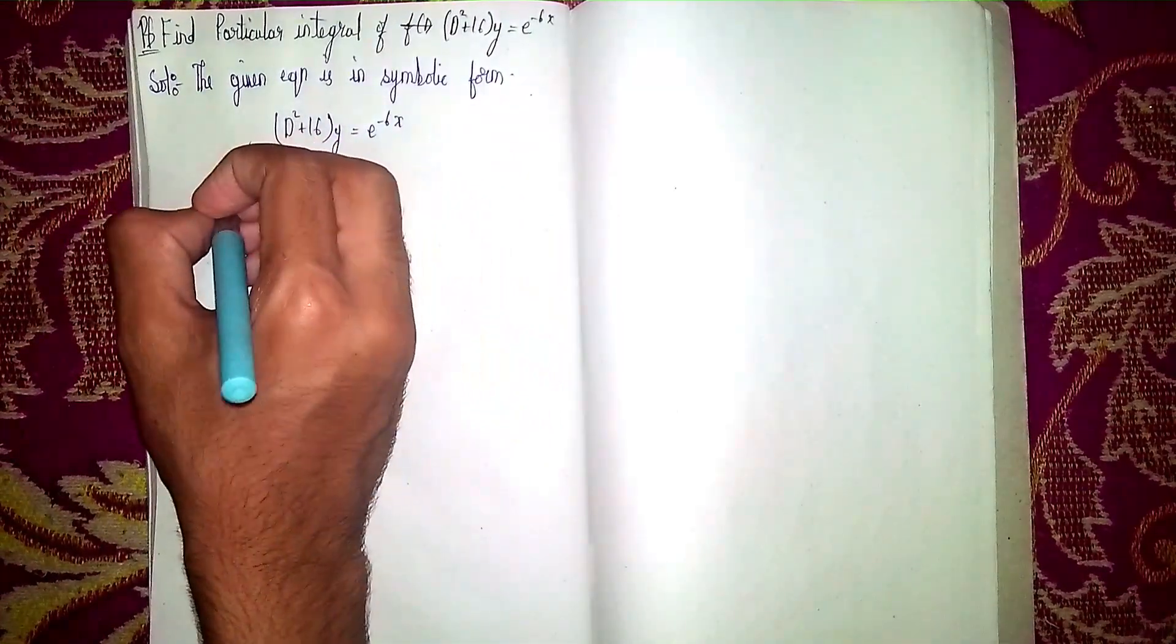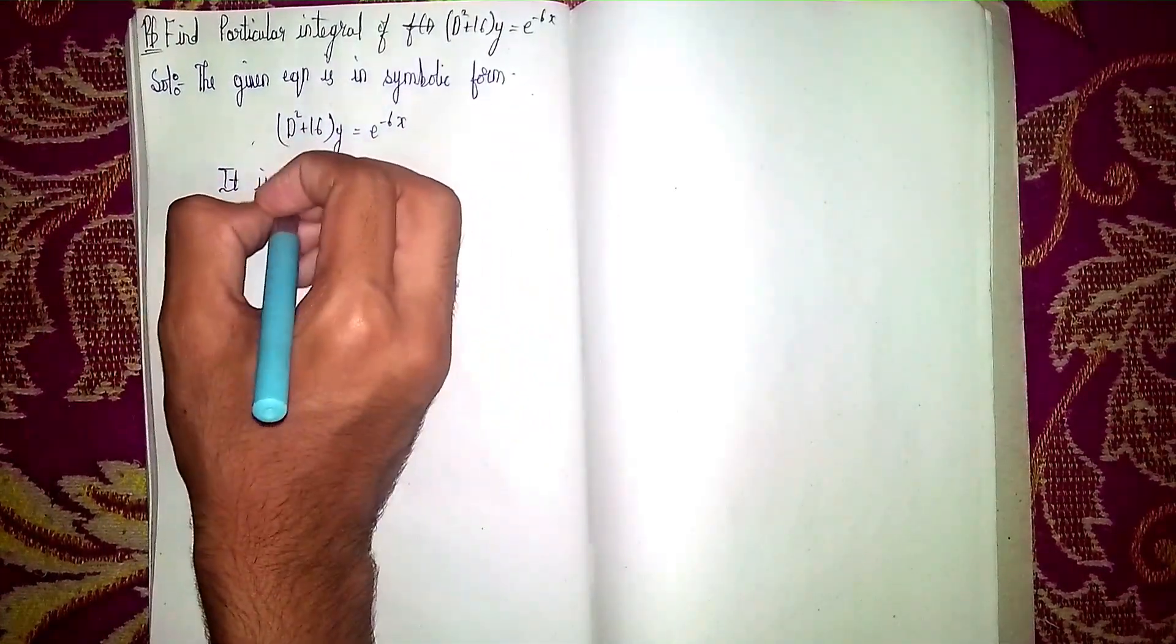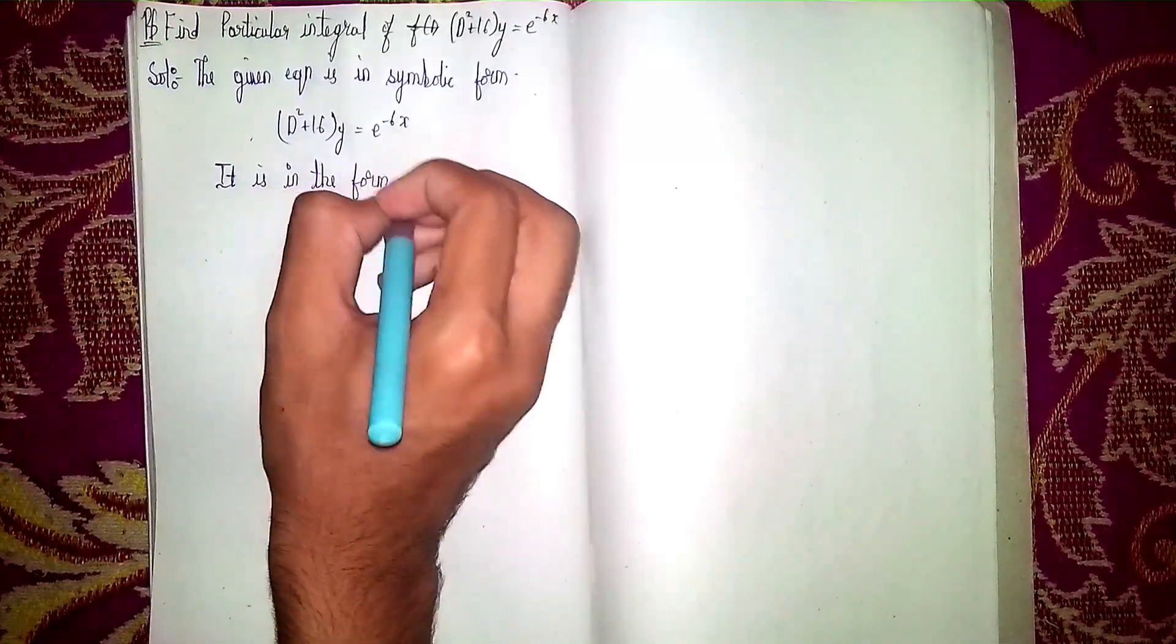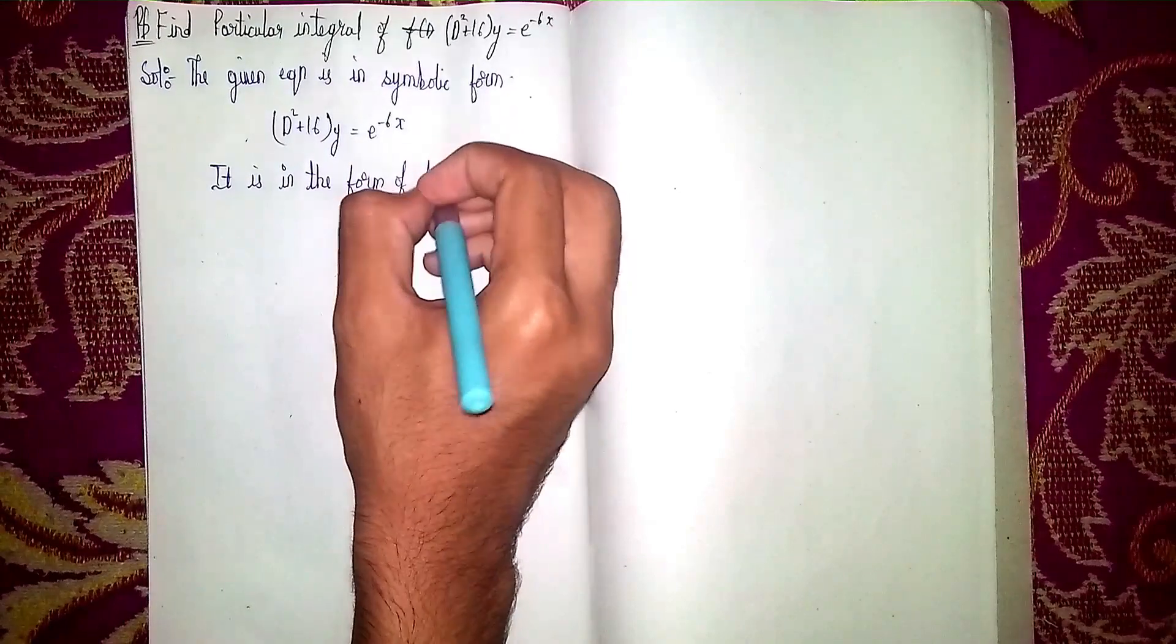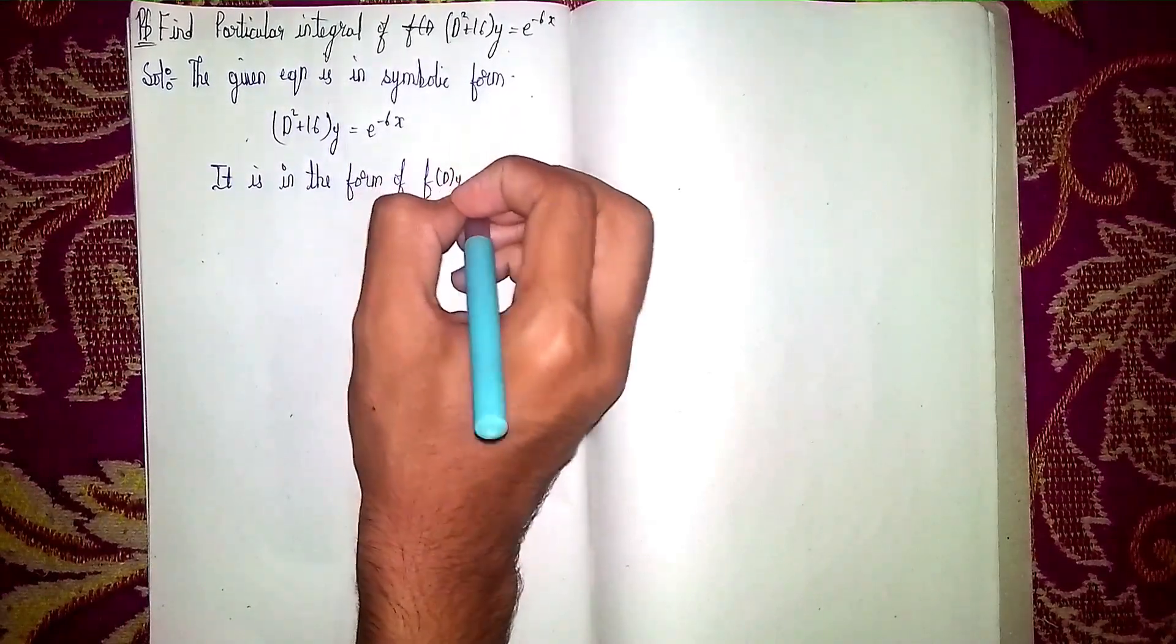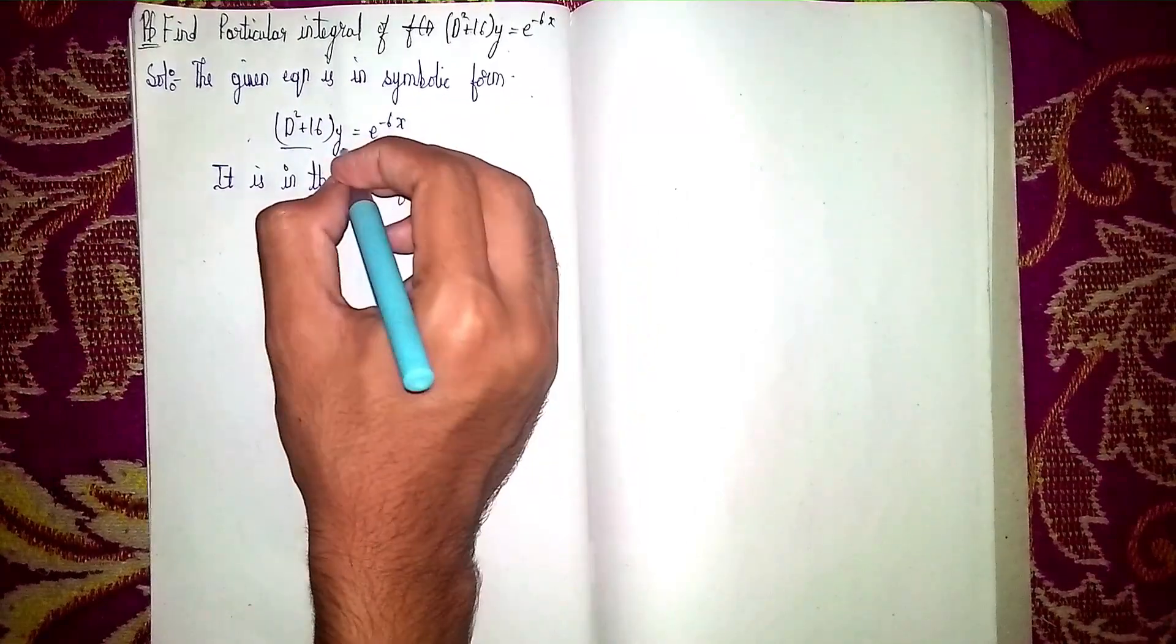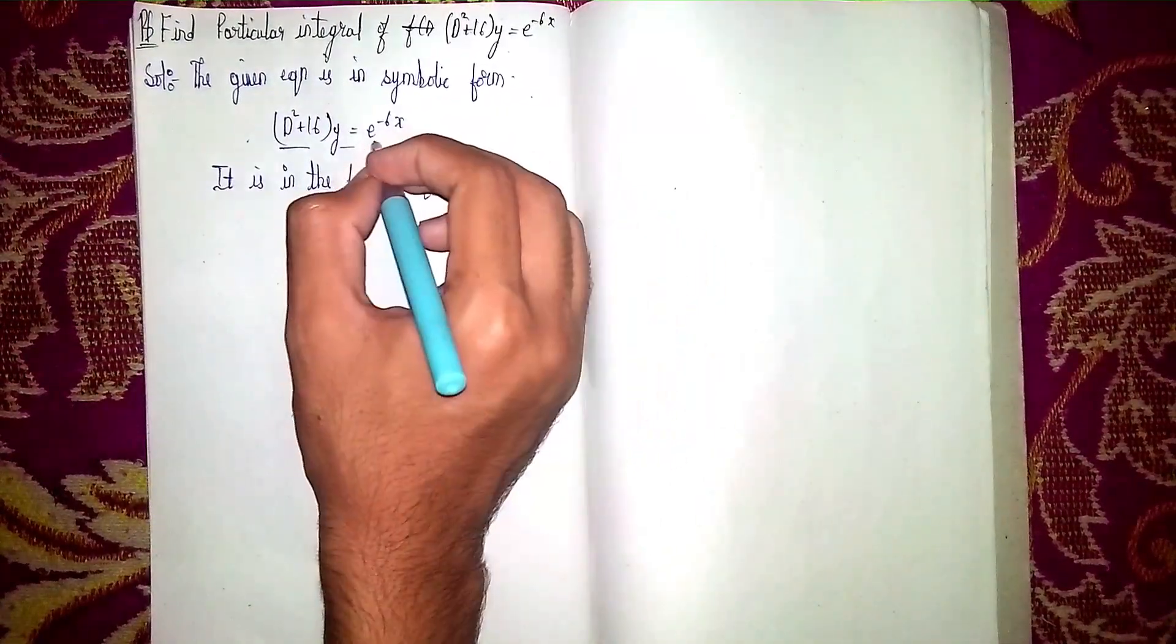It is in the form of f(D)y = x. This is f(D), this is y, then this whole function is x.